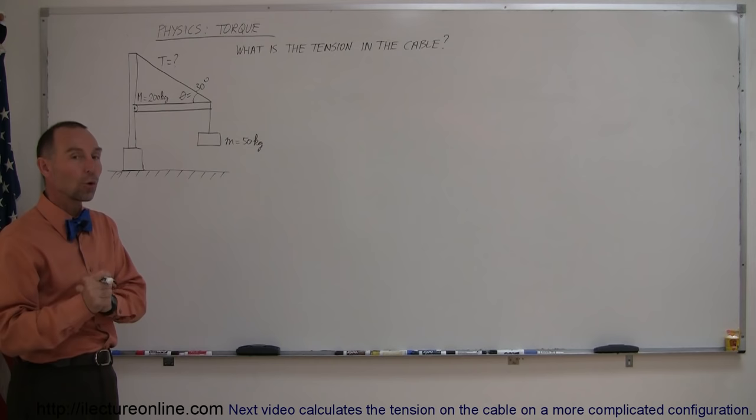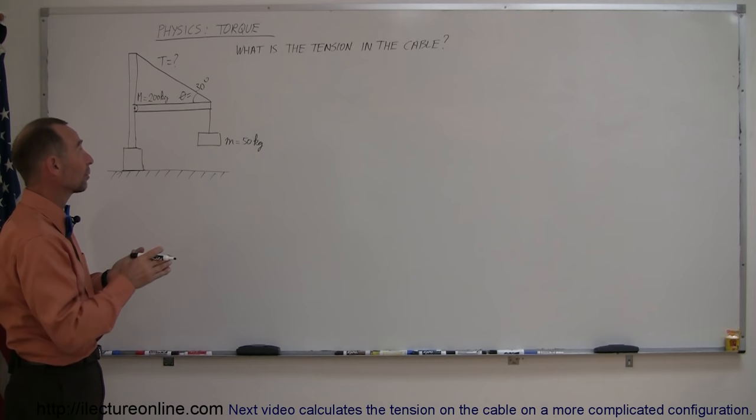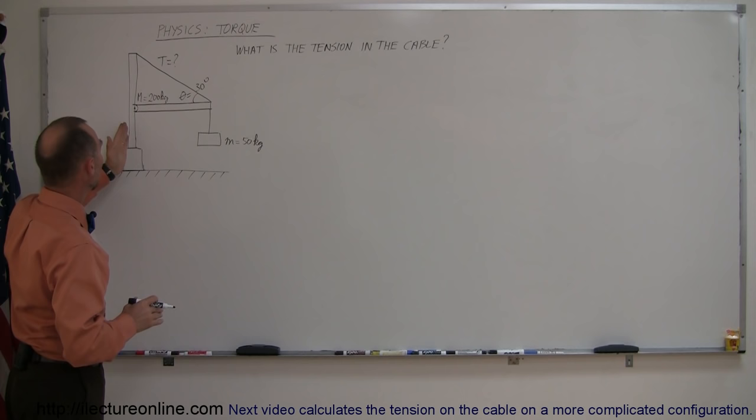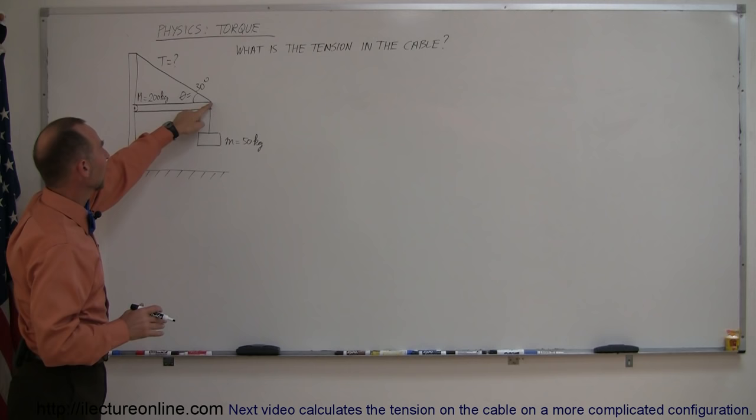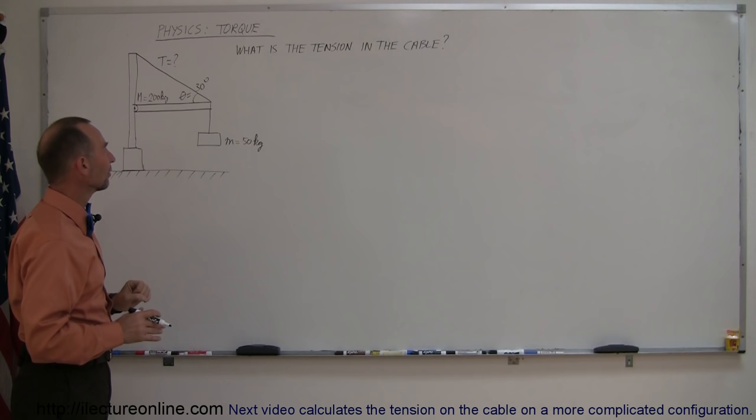Here we have a vertical pole, we have a beam attached to the pole that is able to pivot, we have a cable keeping it from moving, and then we have a mass hanging from the very end of that beam.